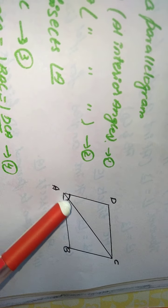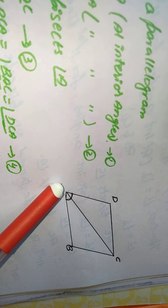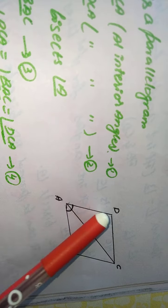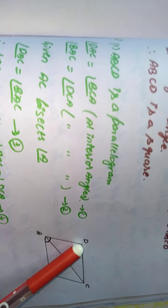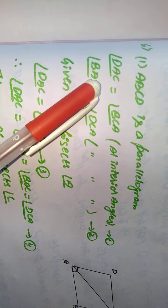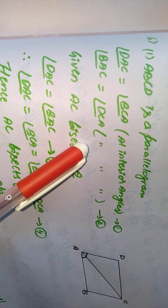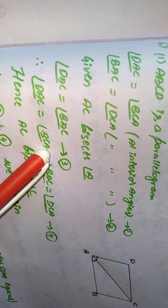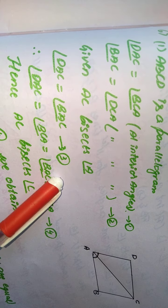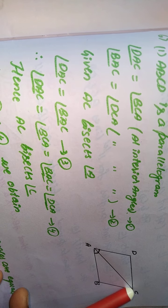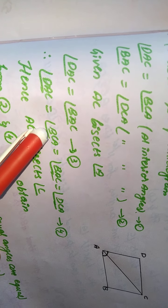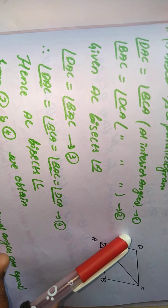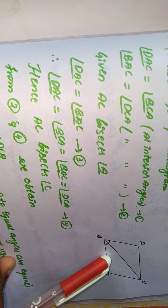...then this forms a Z-shape, meaning alternate angles will be equal: angle DCA equals angle CAB, and angle DAC equals angle BCA as alternate interior angles. Also, angle BAC equals angle DCA as alternate interior angles. Since AC bisects angle A, angle DAC equals angle BAC. Therefore, angle DAC equals angle BAC equals angle BCA equals angle DCA, and hence AC bisects angle C also. That is your first proof.